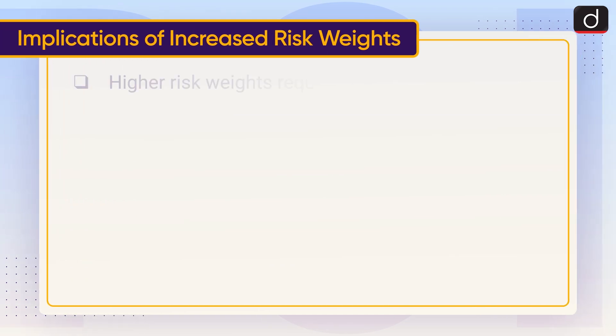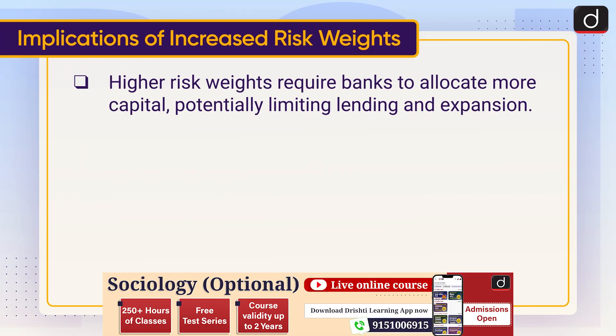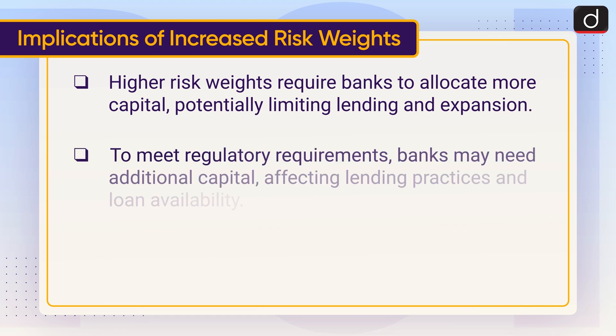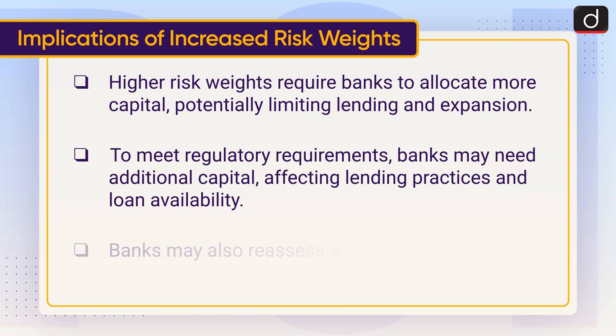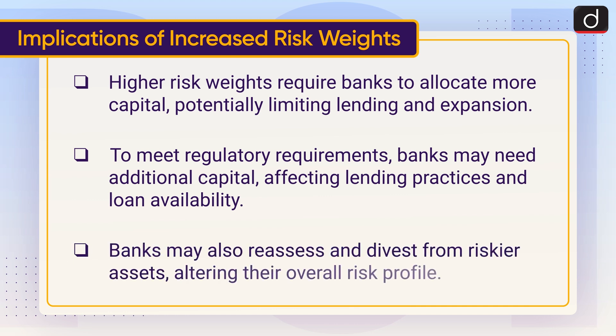Now, moving on to the implications of increased risk weights. Higher risk weights require banks to allocate more capital, potentially limiting lending and expansion. To meet regulatory requirements, banks may need additional capital, affecting lending practices and loan availability. Banks may also reassess and divest from riskier assets, altering their overall risk profile.